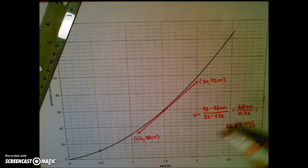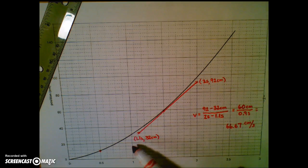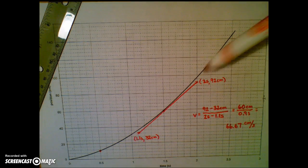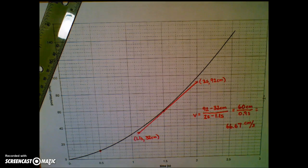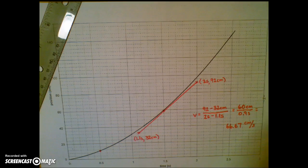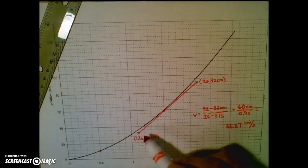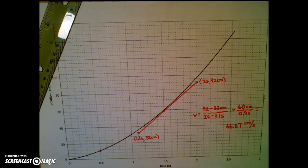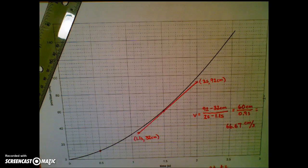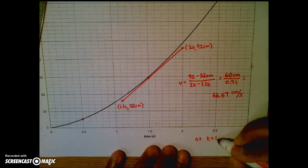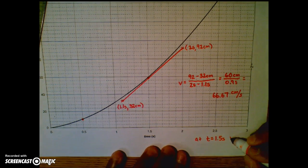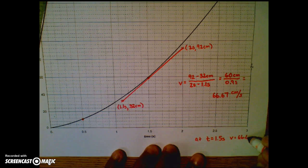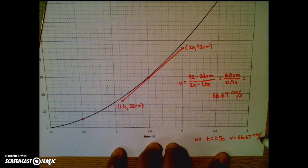I could figure out the velocity at 0.5, 1, 1.5, 2, and 2.5 seconds by following that same procedure: picking each point, drawing a tangent line to that point, finding two points on the tangent line, and determining the slope. So at a time of 1.5 seconds, my velocity is 66.67 centimeters per second.